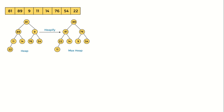So you have to represent the array in the form of a tree. Now actually there are two types of heap: you have max heap and you have min heap. In a max heap, the parent will be greater than the left child and right child. In a min heap, the parent will be less than the left child and the right child.